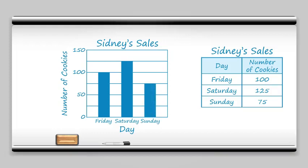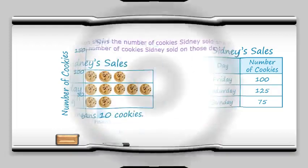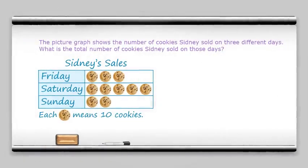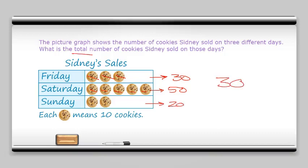Now to be experts at picture graphs and bar graphs, we need to be able to answer questions about them. Here we want to know the total number of cookies Sydney sold on these days. Notice that our key says each cookie picture equals 10 cookies. So on Friday I have 10, 20, 30 cookies. On Saturday I have 10, 20, 30, 40, 50 cookies. And on Sunday just two pictures, so that's 20. To find a total, we add, and that gives us 100.